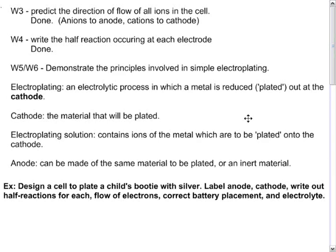The cathode is the material that will be plated, whatever you'd like to plate. The electroplating solution should contain the ions of the metal which are to be plated. The anode can be made of the same material to be plated, which will actually help the reaction out a little bit, or you can make it of an inert material. Either way will work.